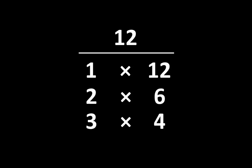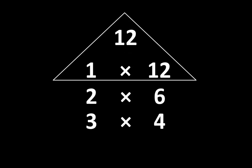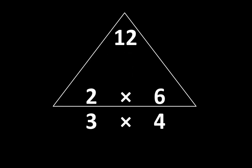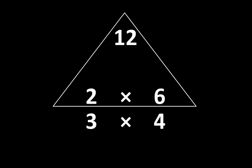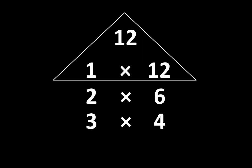Here is another example — another list you will find on your page of factor pairs. Since all of these pairs are factors of twelve, we know they are all related to twelve. One times twelve is equal to twelve, and at the same time two times six is equal to twelve, and at the same time three times four is equal to twelve.